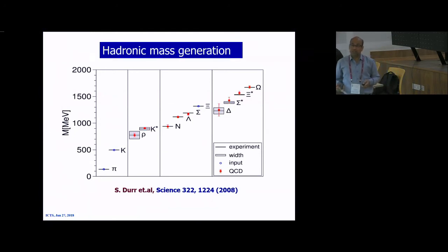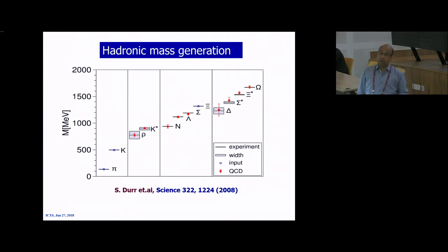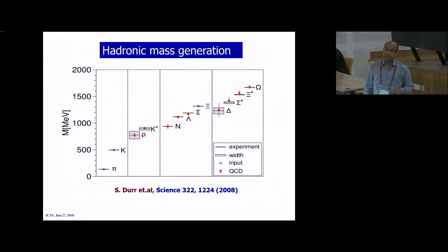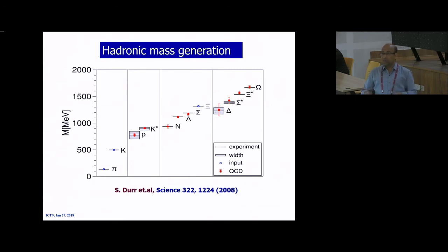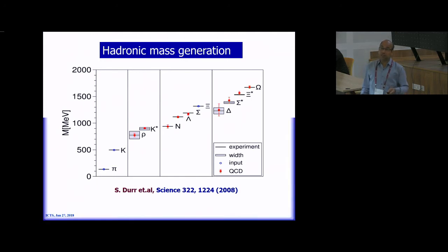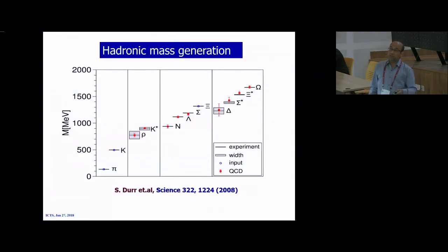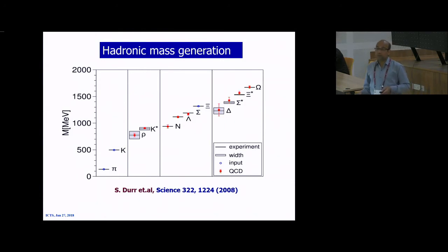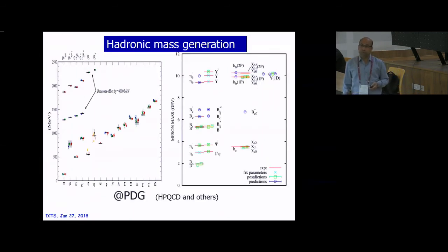Now I will show results. This famous plot shows the masses of different particles from the baryon-meson table. Input parameters are the pion (for light quark mass) and kaon (for strange quark mass), with all systematics under control. With that, they are able to post-dict all the masses. This is a tremendous achievement — it shows that lattice is working fine and we can calculate physical observables. Many other groups have also calculated these. The experiment is in red, fixed parameters in green, and predictions in blue.